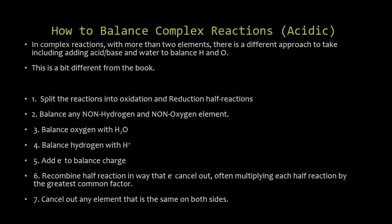Now, how to balance complex reactions. We treat these in acidic solutions. In complex reactions there are more than just two elements present, so we take a different approach — including adding acid, base, and water to balance hydrogens and oxygens. This method differs slightly from the textbook, but as long as you get the right answer it doesn't matter. Steps one and two are the same as before; the new steps are three, four, and seven.